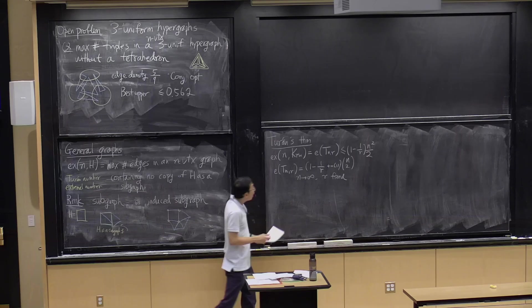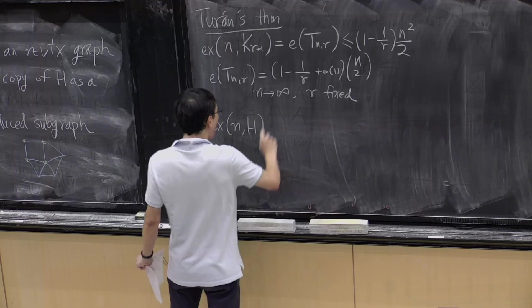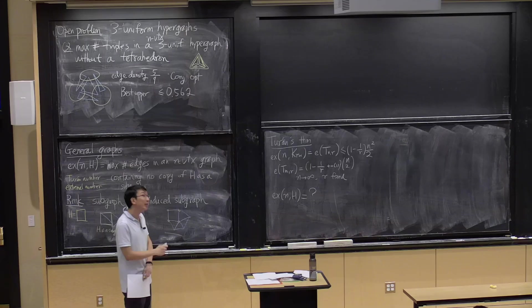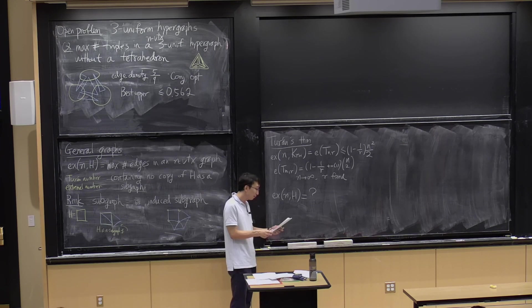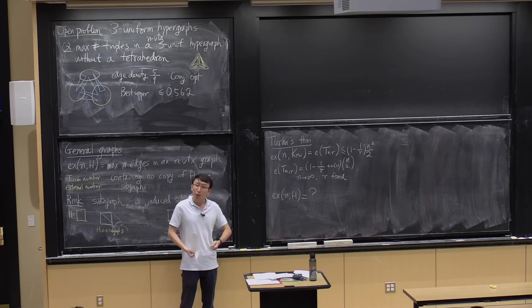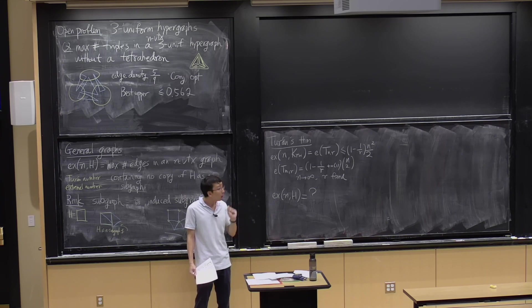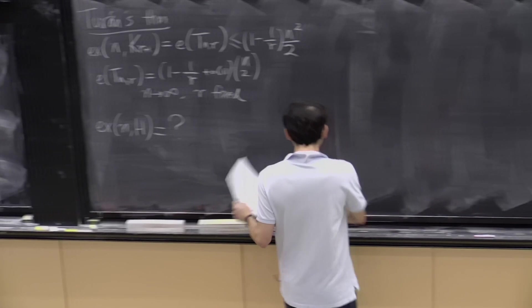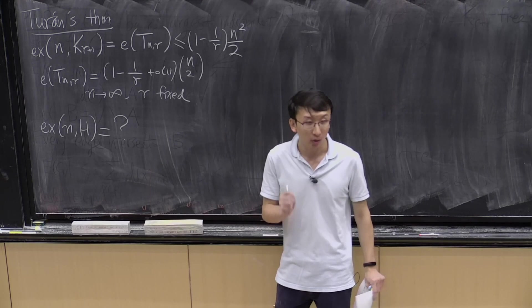The basic question is: what about general H? If I give you some arbitrary graph H, what can you tell me about the maximum number of edges in a graph forbidding H as a subgraph? It turns out that for most graphs, we have a pretty good understanding, and perhaps quite surprisingly, the critical parameter that governs how this quantity behaves is the chromatic number of H.